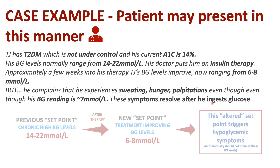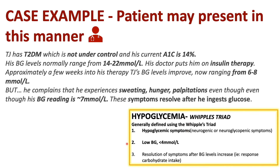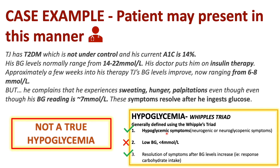Remember that we define hypoglycemia using the Whipple's triad. Does TJ have hypoglycemic symptoms? Yes. Does he have low blood glucose levels under 4 millimoles per liter? No — we can see it's ranging from 6 to 8 millimoles per liter, so that's not technically a low blood glucose level. Does he have resolution of symptoms after blood glucose levels increase? Yes, after he ingests glucose his symptoms improve. So TJ's case does not follow the full definition of hypoglycemia — he's not having a true hypoglycemia, which is why we term it pseudohypoglycemia.